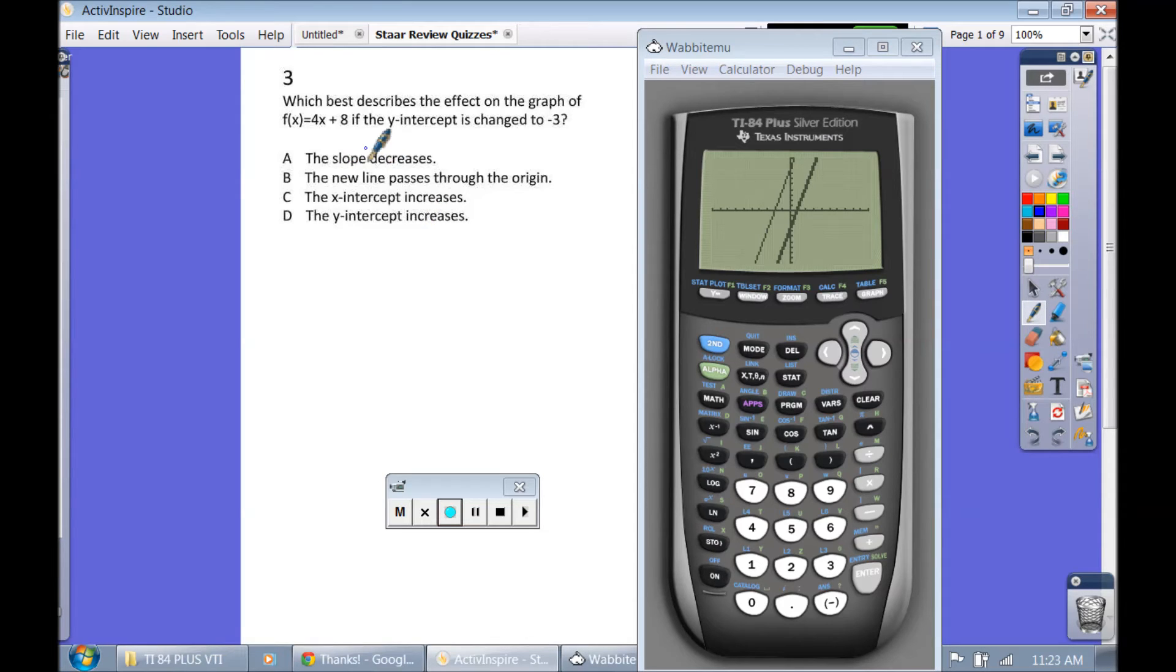Let's look at our answer choices. Did the slope decrease? No, because both of the slopes are 4. The new line passes through the origin. It did not pass through the origin. Look at the x-intercepts where it crosses the x-axis. You see over here it crosses like at negative 2, and then it goes to positive 1. So that is our answer.